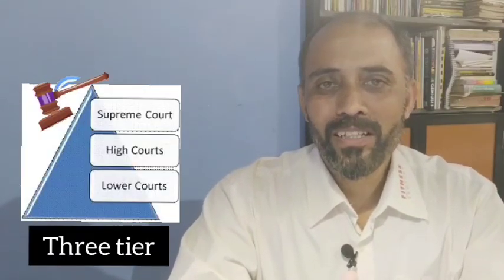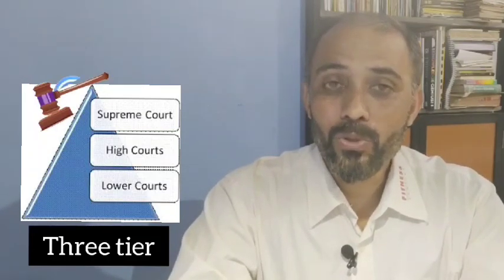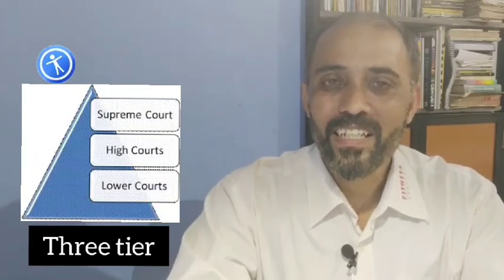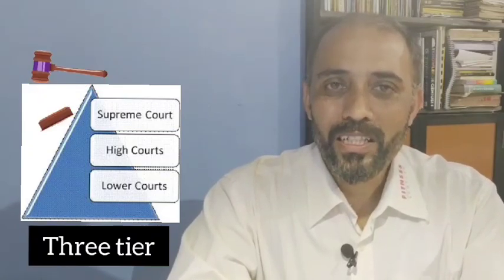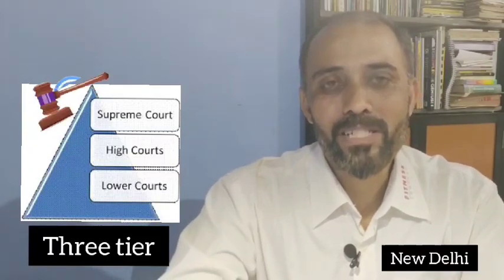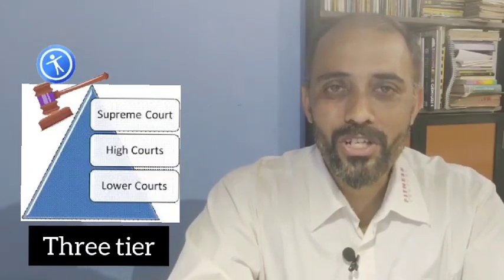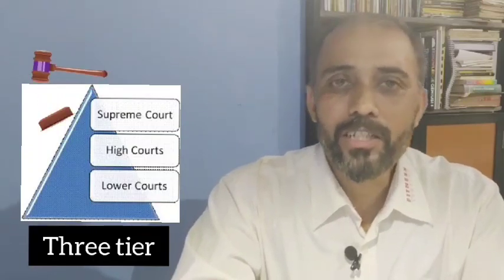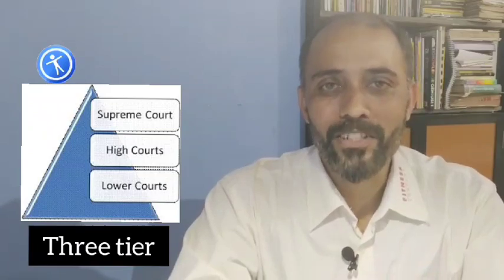Indian Judiciary is divided into three tiers: the Supreme Court, the High Court, and the Session Court. The Supreme Court is the most important court in India, also called the apex court, situated at New Delhi. However, if the Chief Justice of the Supreme Court wishes to have its functioning from another part of India, that can be done with permission from the President of India.